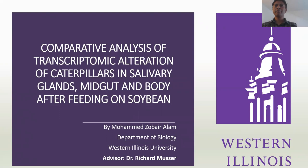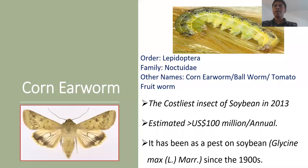Good morning everyone. My name is Muhammad Jabair Alam. I did my research under the supervision of Dr. Richard Musser. My research topic was comparative analysis of transcriptomic alteration of caterpillars in different tissues such as salivary glands, midgut, and body after feeding them on soybean.